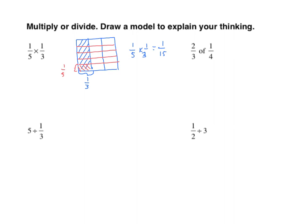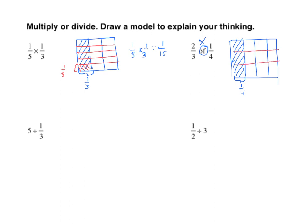The next one is very similar. We have two-thirds of one-fourth. Two-thirds of one-fourth means we are multiplying. So again, we're going to create a rectangular model. I'll partition this into four equal parts, bracket one-fourth, and shade that in. Now we have two-thirds, so I'm going to partition this horizontally into three equal parts. I'll bracket two-thirds and double-shade the two-thirds.